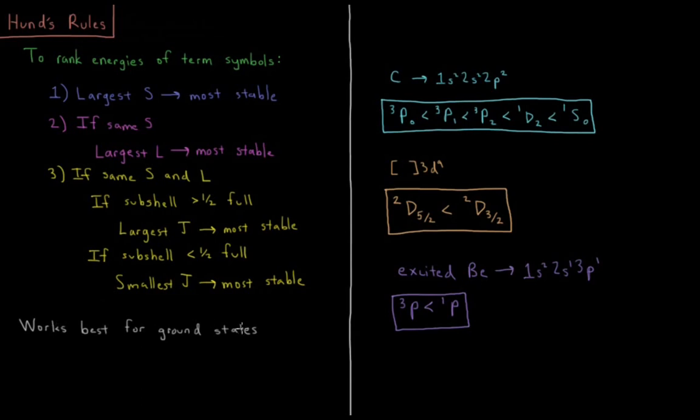So this procedure works best for ground states. It works best for things with one partially filled subshell. Our excited state beryllium, that's a little bit confusing for the values of J within our triplet P, because I don't know whether this is half filled, more than half filled, less than half filled.